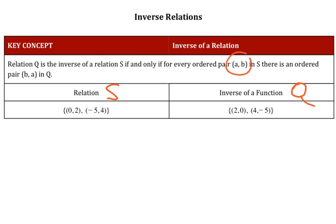If and only if, for every single ordered pair or coordinate or xy, in this guy, there is an ordered pair b a. So these guys are inverses, meaning if you can flip them around, it works out.